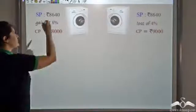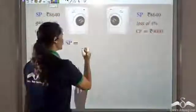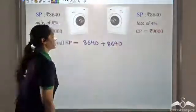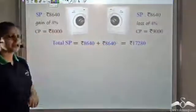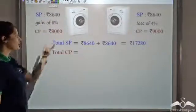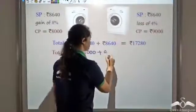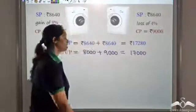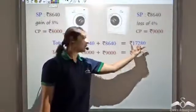We will find the total selling price first. Total selling price is selling price of the first machine plus selling price of the second machine, which is 8640 plus 8640, giving us ₹17280. Now the total cost price is 8000 plus 9000, which gives us ₹17000. So total selling price is ₹17280 and total cost price is ₹17000.